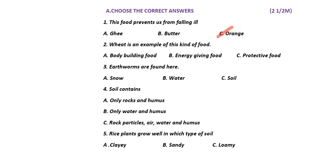Wheat is an example of which kind of food? I told you there are three types of food: energy giving food, body building food, and protective food. Wheat is an example of energy giving food, so option B is your answer. First answer is C, second answer is B. Now moving to the third question.